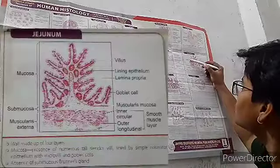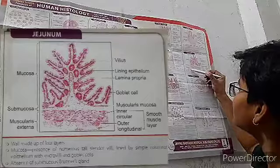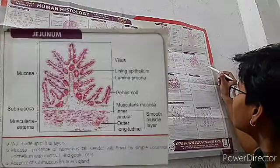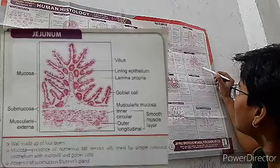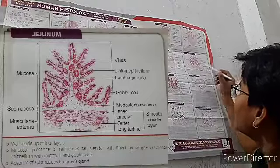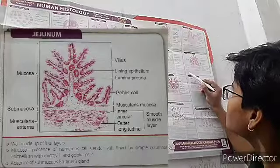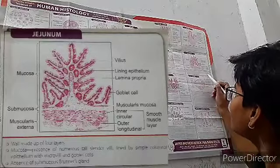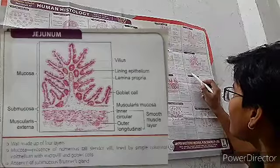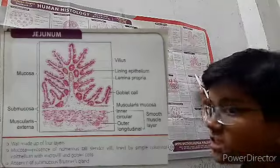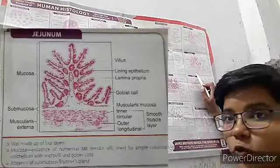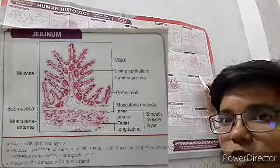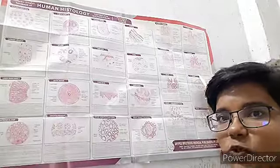Now the jejunum. Visible structures include mucosa, submucosa, muscularis externa, villi, lining epithelium, lamina propria, goblet cells, muscularis mucosae, and inner circular and outer longitudinal smooth muscle layers. The wall is made up of four layers. The mucosa has numerous tall finger-like villi lined by simple columnar epithelium with microvilli and goblet cells. Brunner's glands are absent in the jejunum.